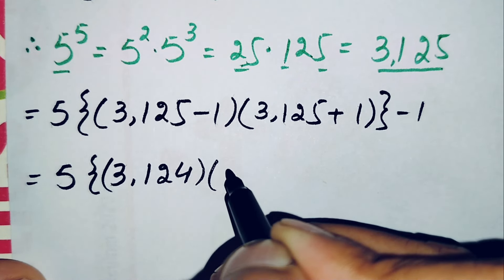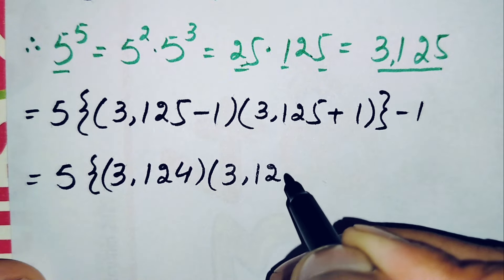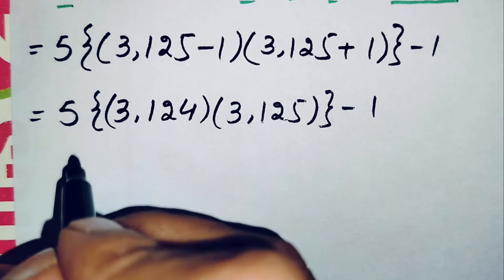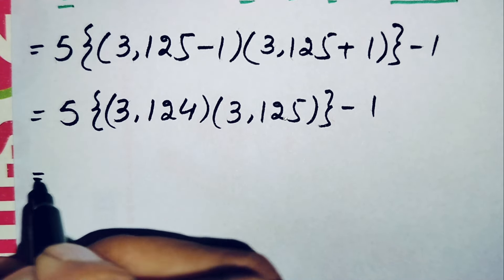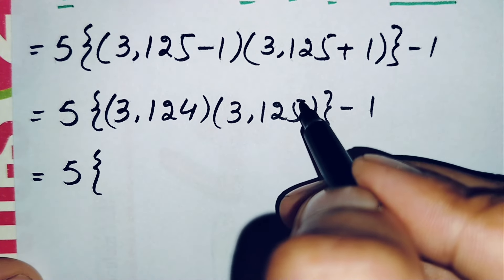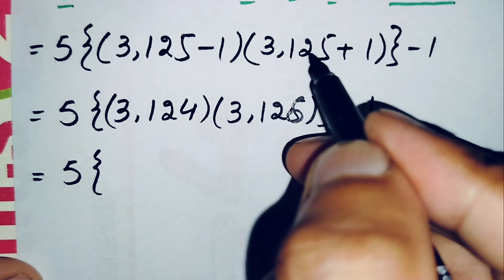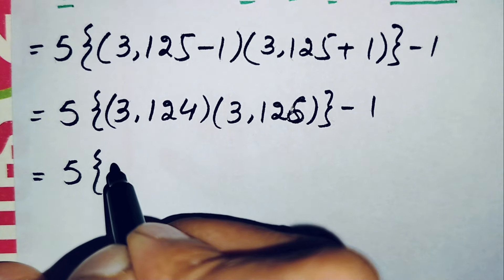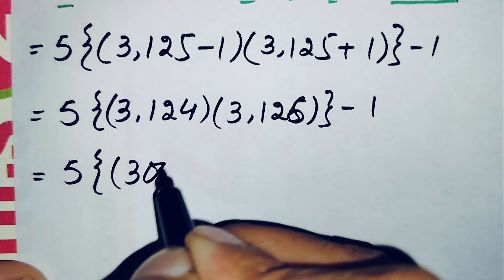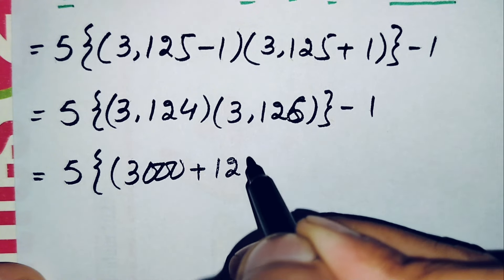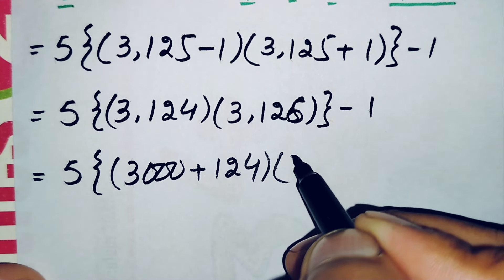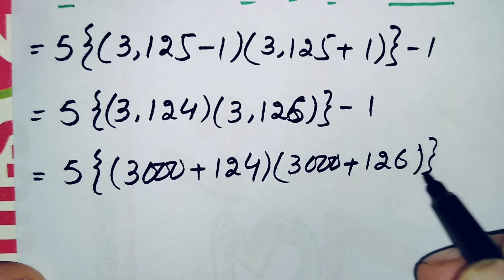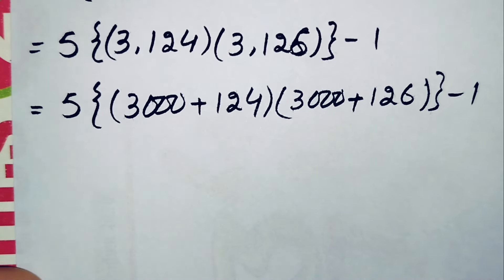Subtracting and adding, we get 3124 and 3126. We can further write these two numbers as 3000 plus 124 times 3000 plus 126, minus 1.